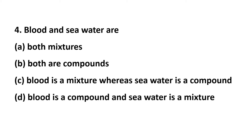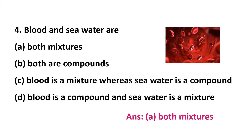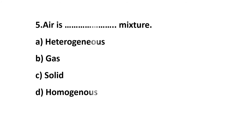Fourth question: blood and sea water are — option A: both are mixtures, option B: both are compounds, option C: blood is a mixture whereas sea water is a compound, option D: blood is a compound and sea water is a mixture. Blood contains many components such as plasma, platelets, WBC, red blood cells, etc. Sea water also contains salt substances. So both are mixture substances — blood and sea water are examples of mixtures.